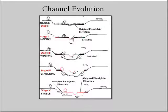The cost of the channel evolution process is long-term extreme river instability and associated hazards and loss of land and any investments such as buildings and roads on those lands. Fish and other aquatic organism habitat and water quality are also significantly degraded by the evolution process.